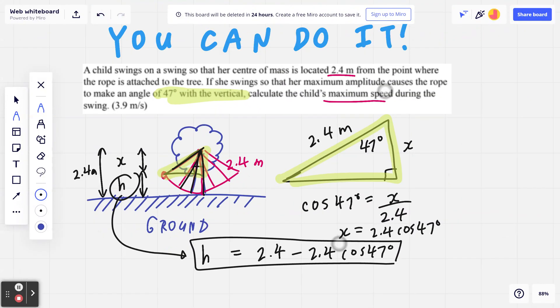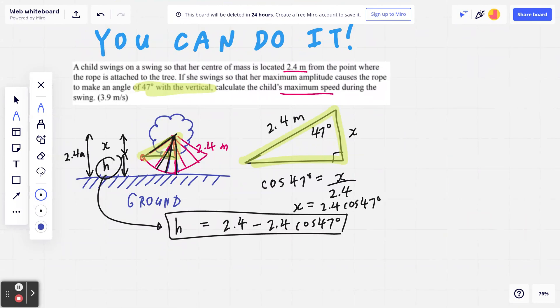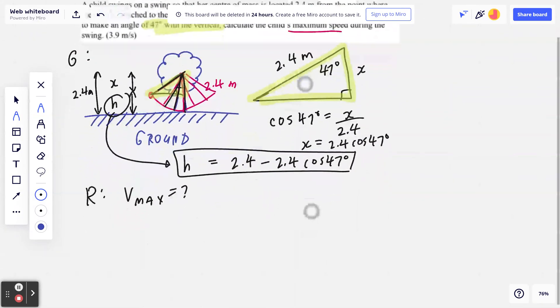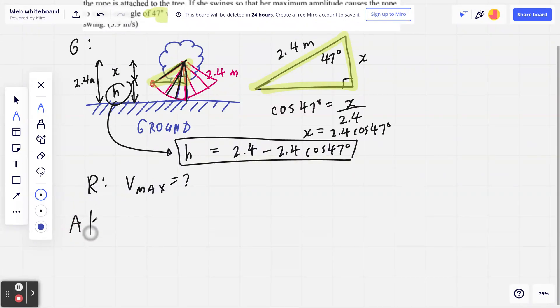The point I'm trying to make right now before we start is that h - and again I'll put a subscript in a moment - this is going to be 2.4, which is the entire length of this rope, minus x, which is 2.4 cosine 47 degrees. Now here are the actual steps. What are we looking for? Maximum speed, so v max.